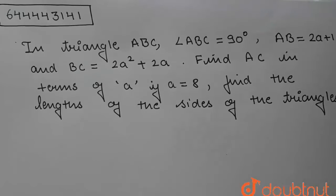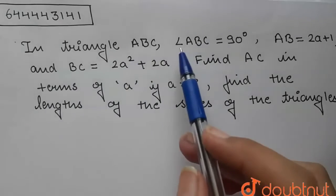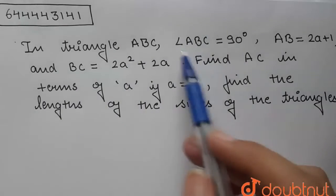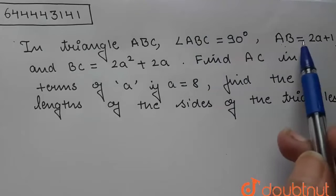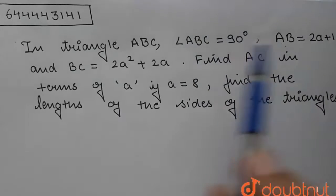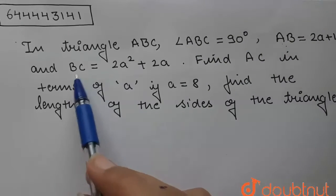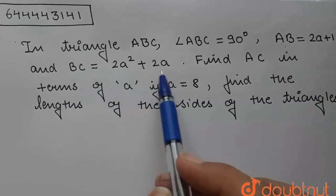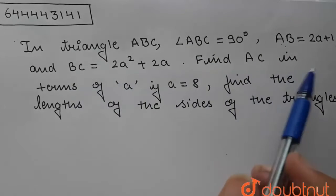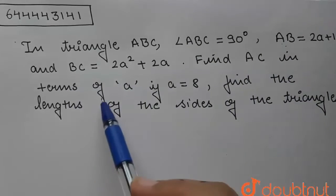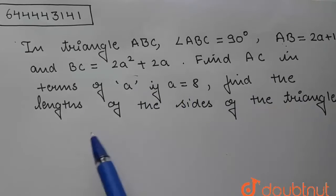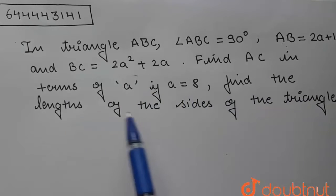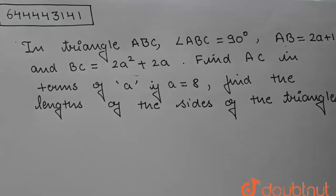Hello students, today's question is: in triangle ABC, angle ABC is equal to 90 degrees, AB is equal to 2a plus 1, and BC is equal to 2a squared plus 2a. Find AC in terms of a. If a is equal to 8, find the lengths of the sides of the triangle.